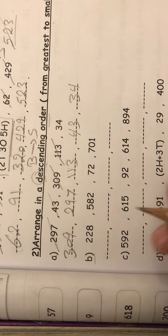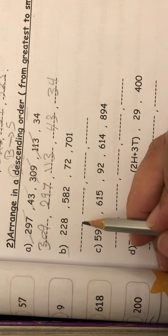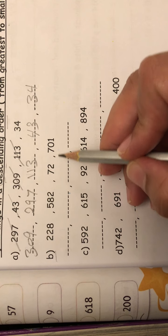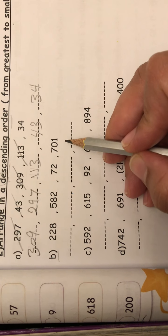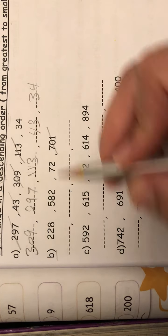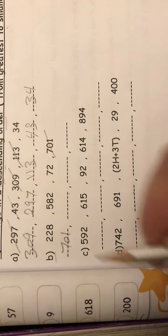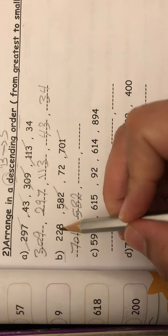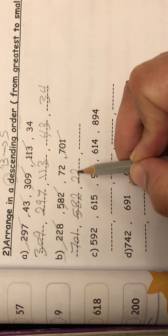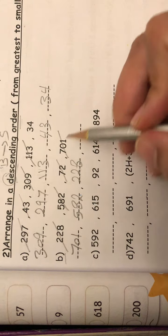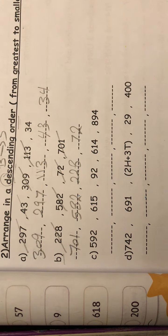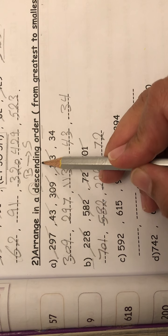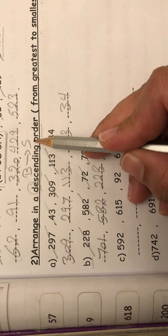Letter B. Here, 228, 582, 72, 701. So let's start with the big number. Excellent. 701. And next, 582, and 228. And last, 72. Because I arrange in descending order, that means from big to small.